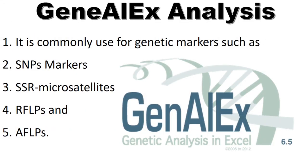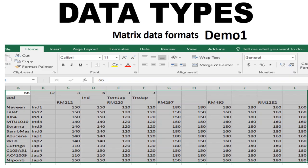Genealix is commonly used for genetic marker data such as SNP markers, SSR microsatellite, RFLP, and AFLP microsatellite data. If you don't know how to prepare the data file format, please watch my previous video on how to prepare data file formats — link given in the description below.